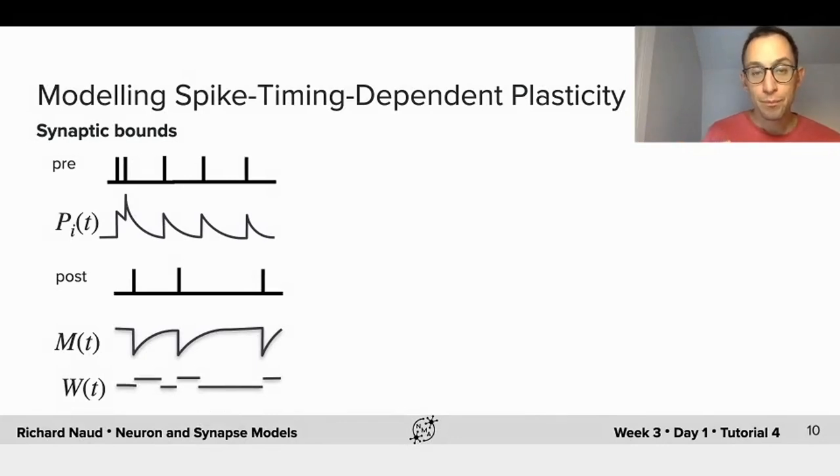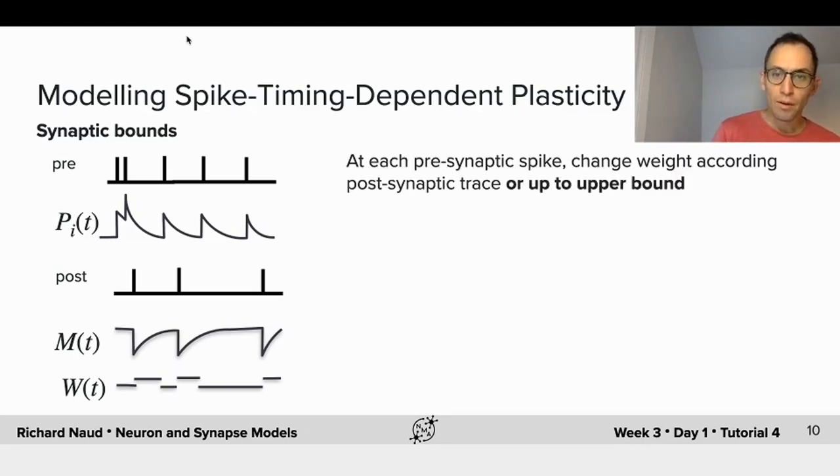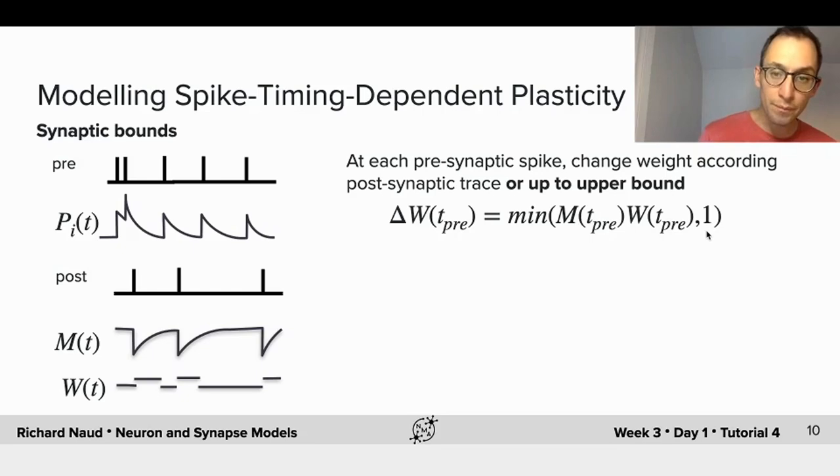But we're not finished. Connection strengths cannot keep on increasing forever. And similarly, they cannot decrease and then become negative, because neurons do not go from being excitatory to suddenly become inhibitory. So we need to impose bounds on the dynamics of the synaptic weights. The way that we use to do so matters quite a bit. Here I just chose one particular example, where whenever we are changing upon a pre-synaptic spike, instead of increasing to an infinite bound, we will compare the increase that we wanted to take with some upper bound, here 1, and take the minimum value of the two.